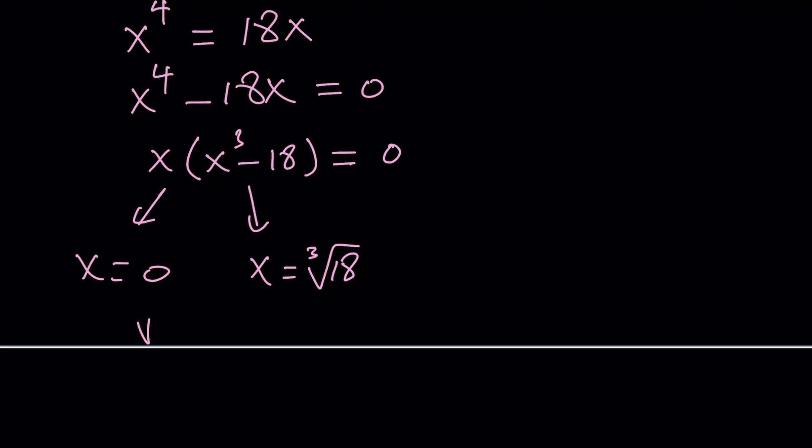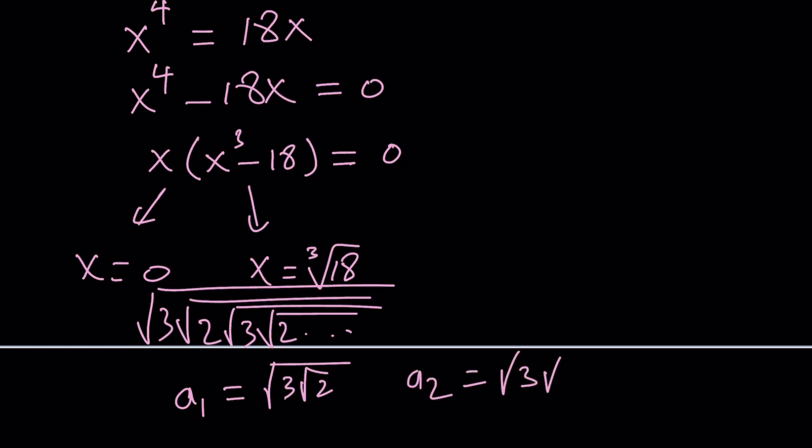We started off with something like this. And as you can see, if we define a sequence like a sub n, the first term would probably be this one. And the second term would be this one. You have to take care of both the 3 and the 2 because they alternate, so you kind of have to include both otherwise you can't really define it.